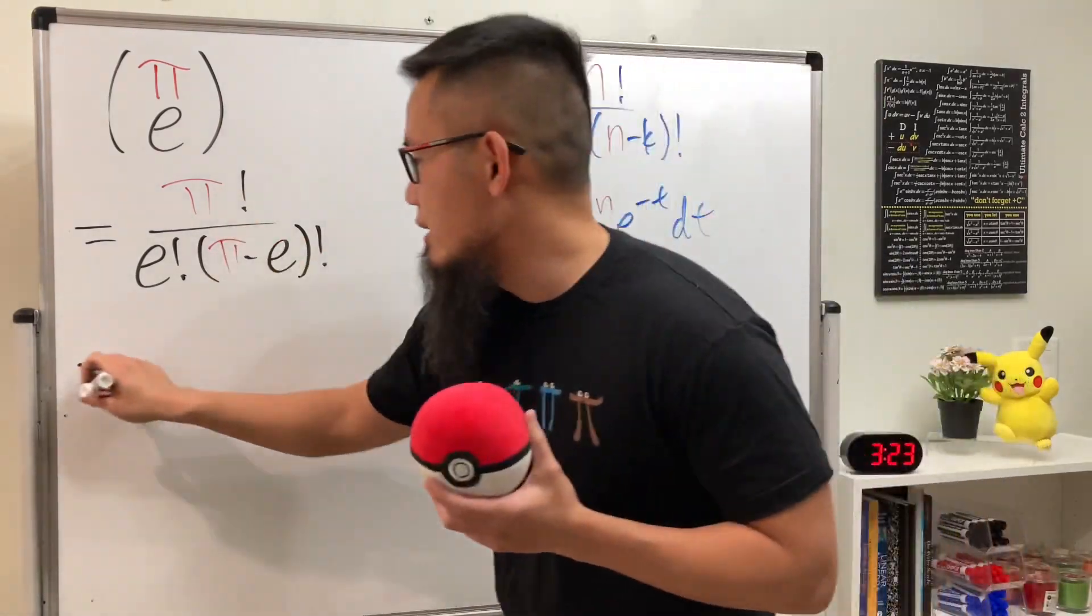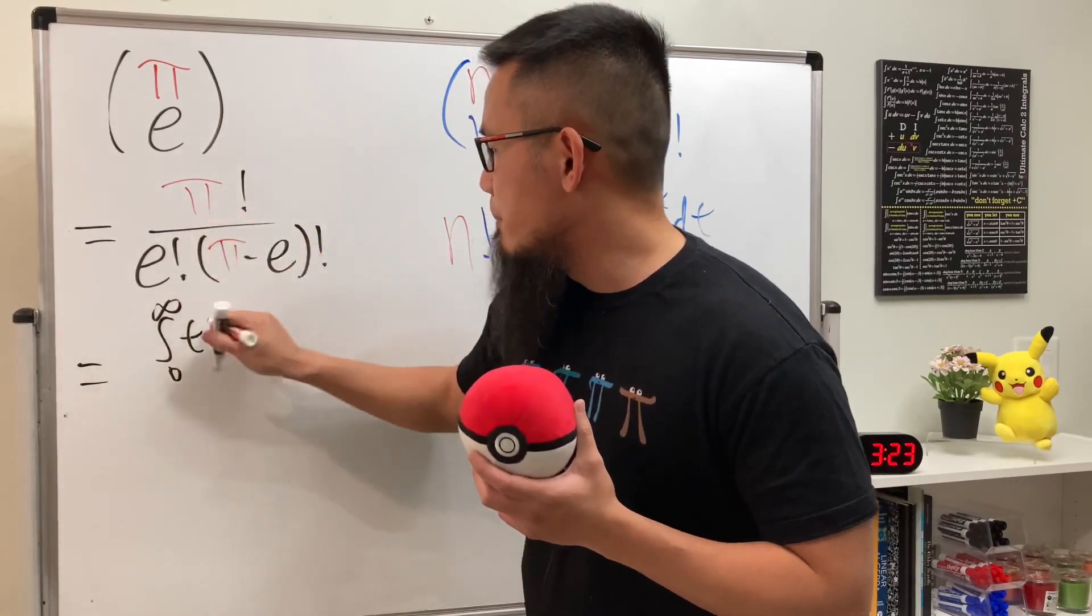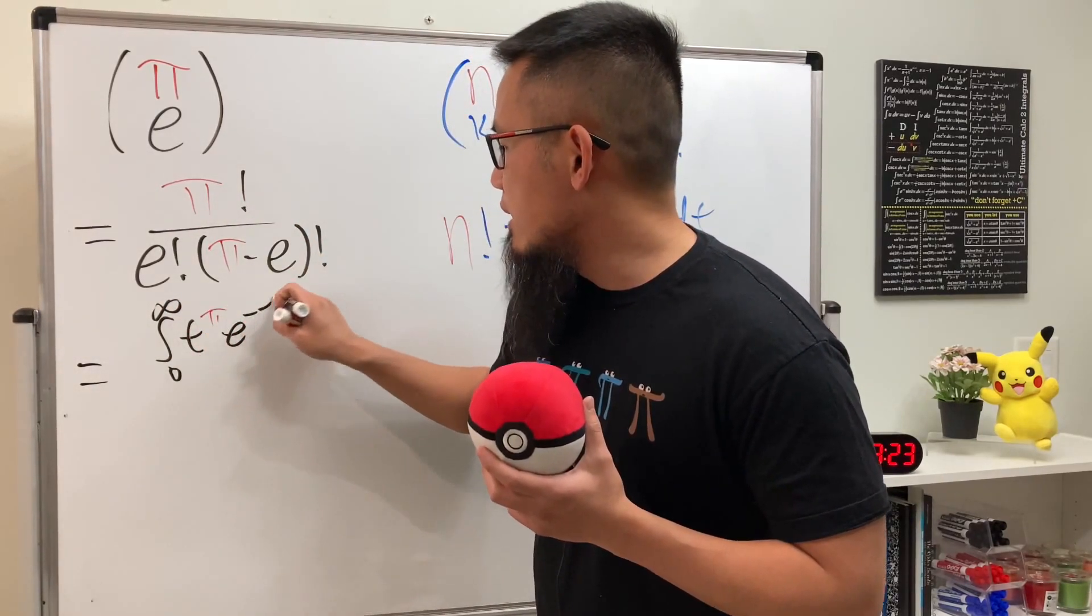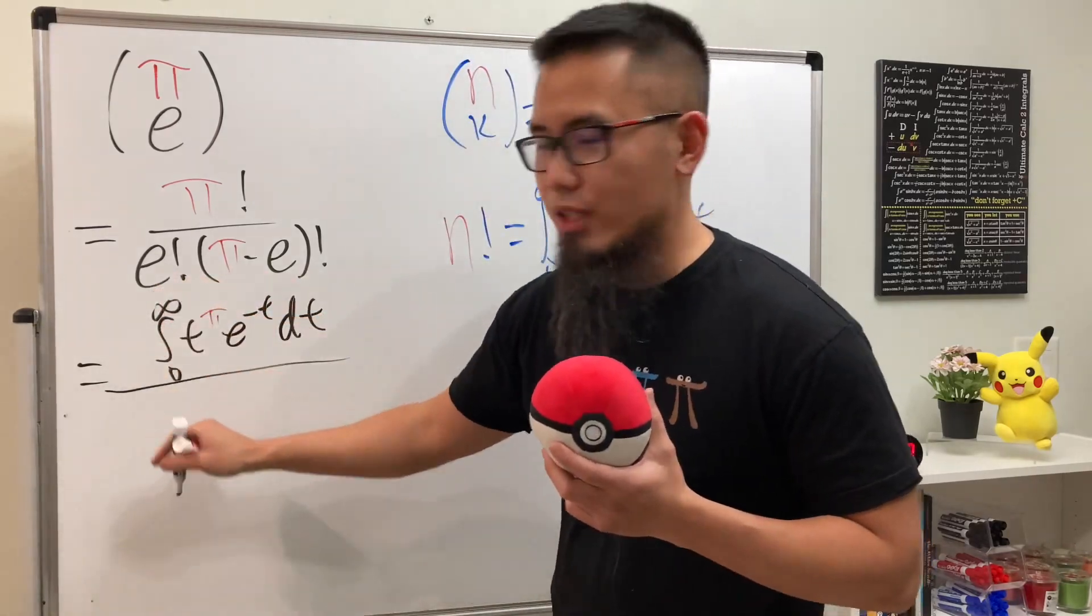On the top it's going to be the integral from 0 to infinity of t to the π power e to the negative t dt, divided by - we have another integral here.